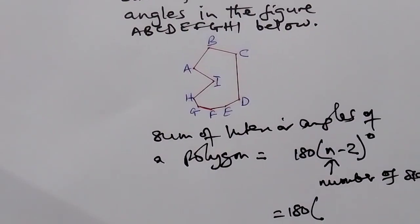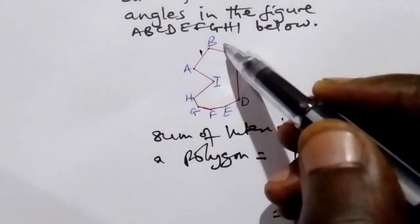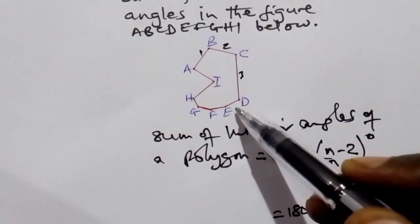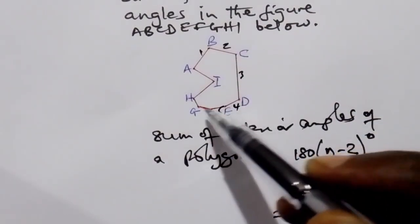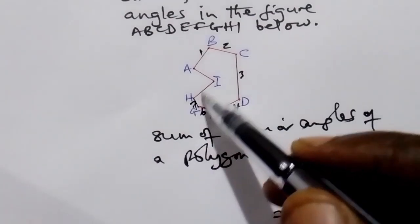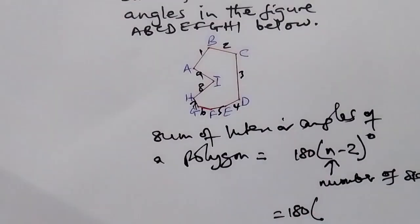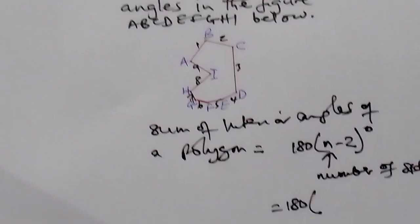How many sides do we have here? 1, 2, 3, 4, 5, 6, 7, 8, 9. We have 9 sides.